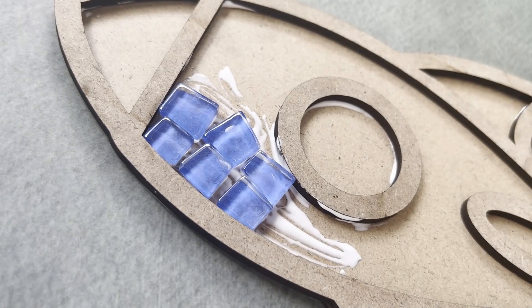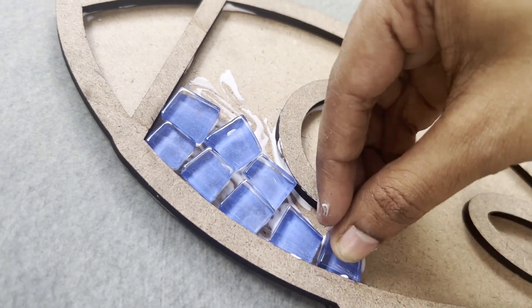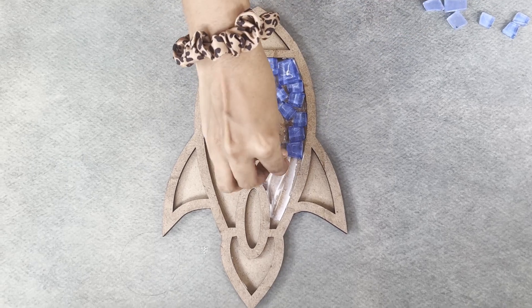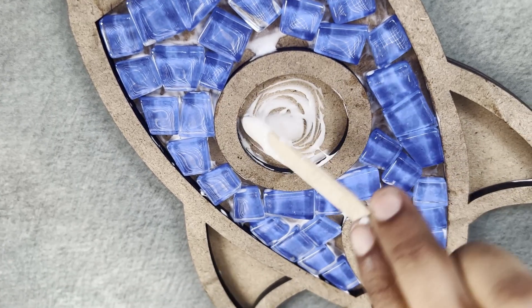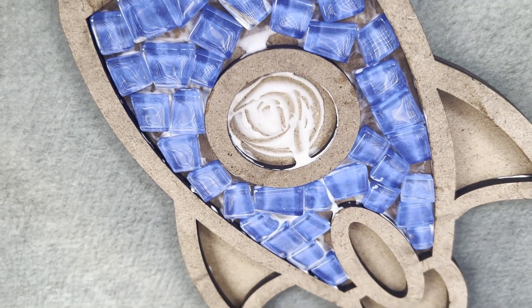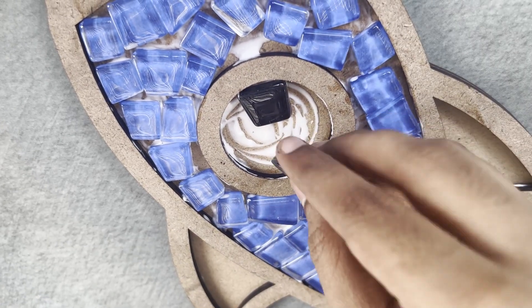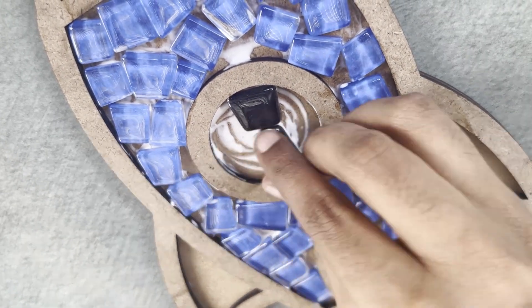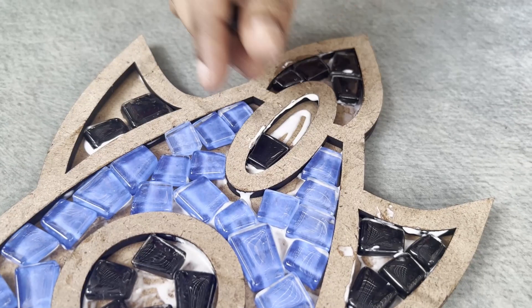Work in small areas to prevent the glue from drying before you can place the glass tiles. Repeat the process until you've covered the entire MDF base, ensuring that you're not leaving white gaps between the tiles. Let the glue dry thoroughly for 10 minutes.